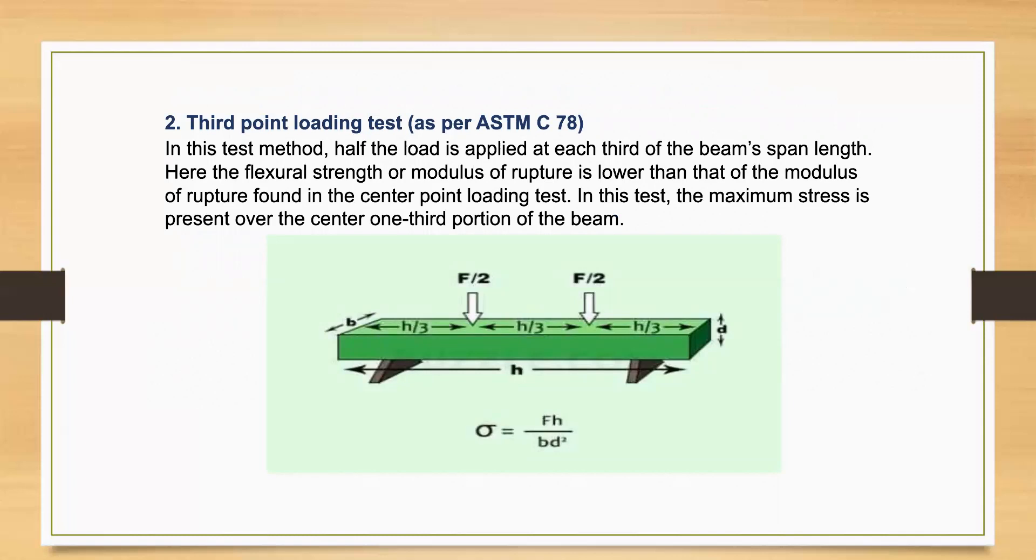The second one is the third point loading test. In this test method, half the load is applied at each third of the beam's span length. Here, the flexural strength or modulus of rupture is lower than that of the modulus of rupture found in the center point loading test. In this test, the maximum stress is present over the center one-third portion of the beam.